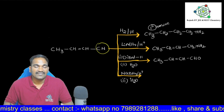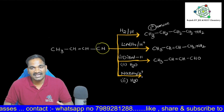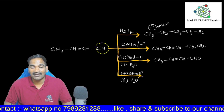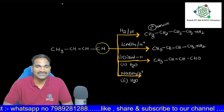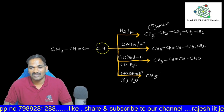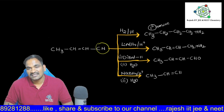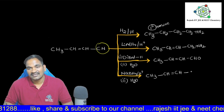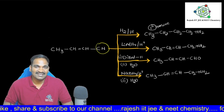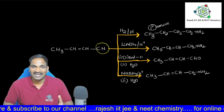Now coming to sodium borohydride (NaBH₄). Here also the same story — it is a mild reducing agent followed by hydrolysis. The cyanide will be converted into a primary amine, but the double bond is never reduced. So therefore, you see CH=CH remains, and here CH₂-NH₂ is formed. This is about our list of reducing agents and how they function on the given reactant.